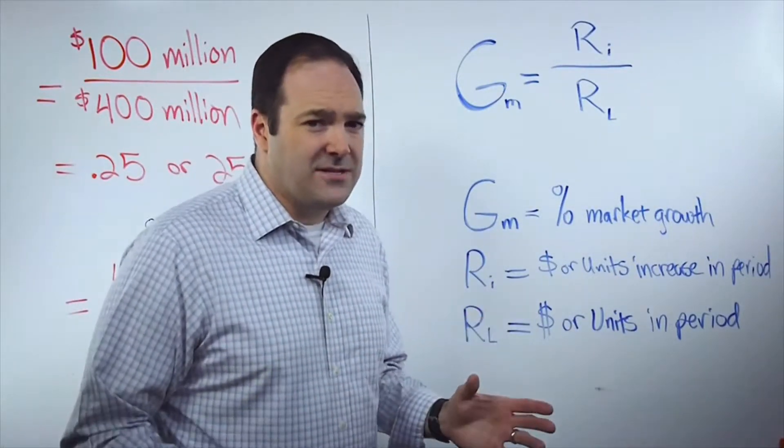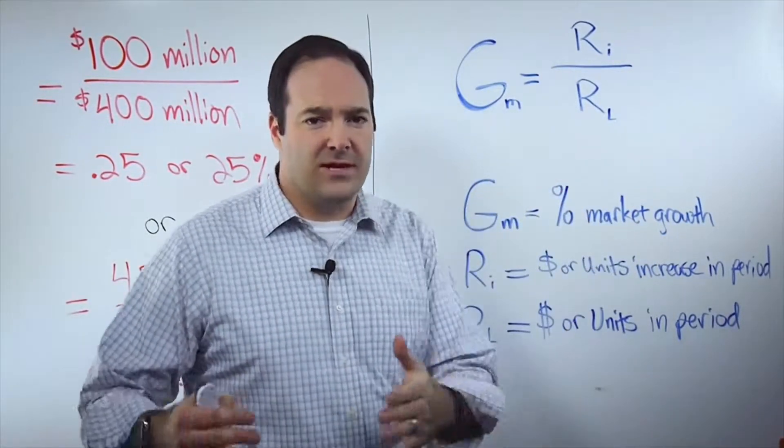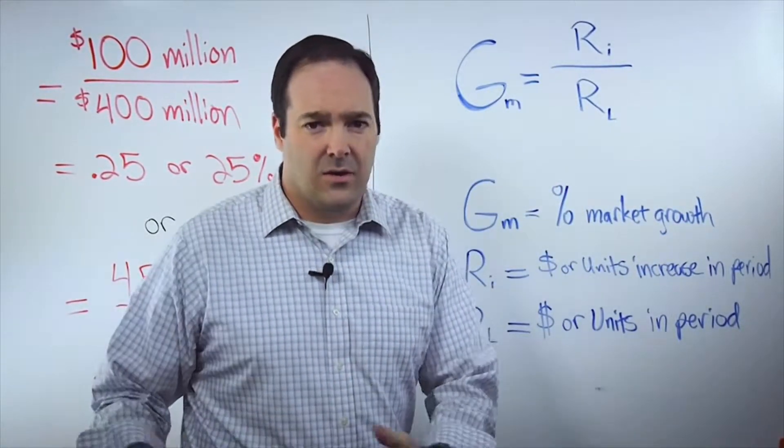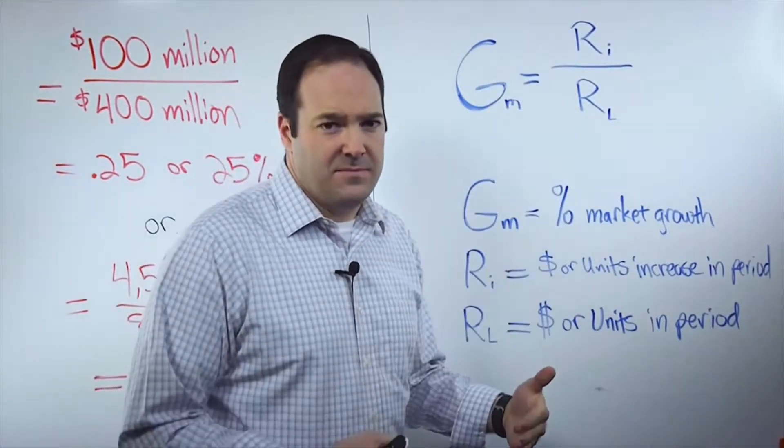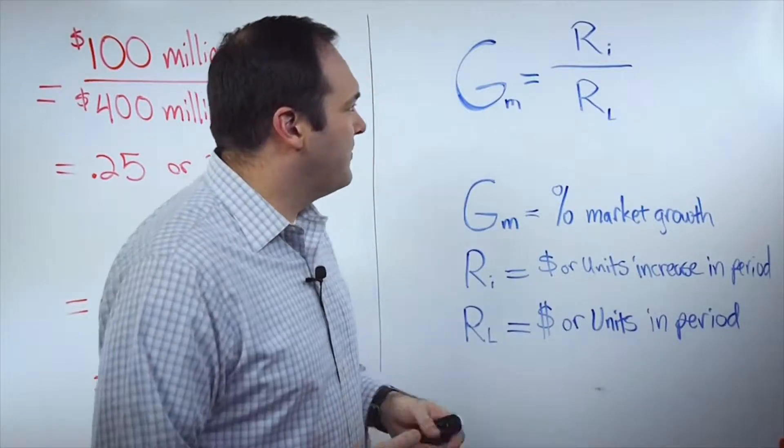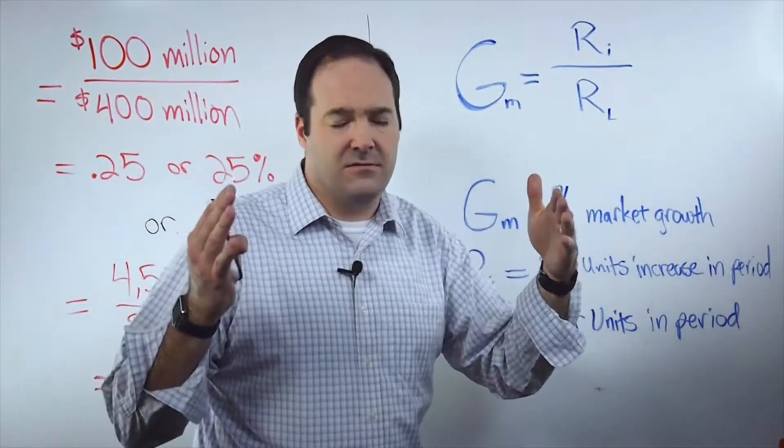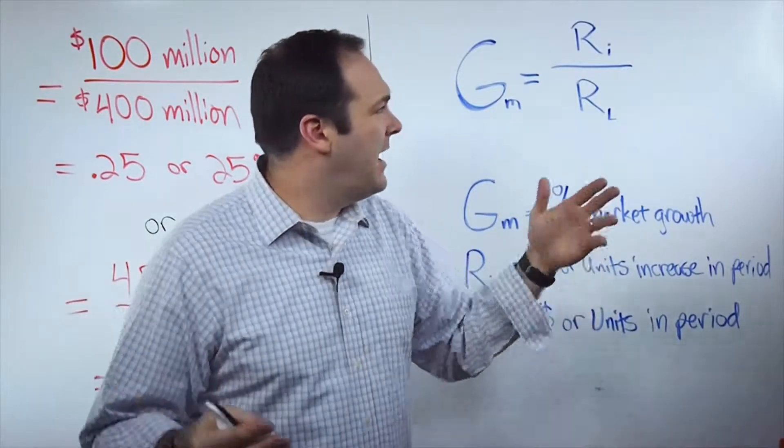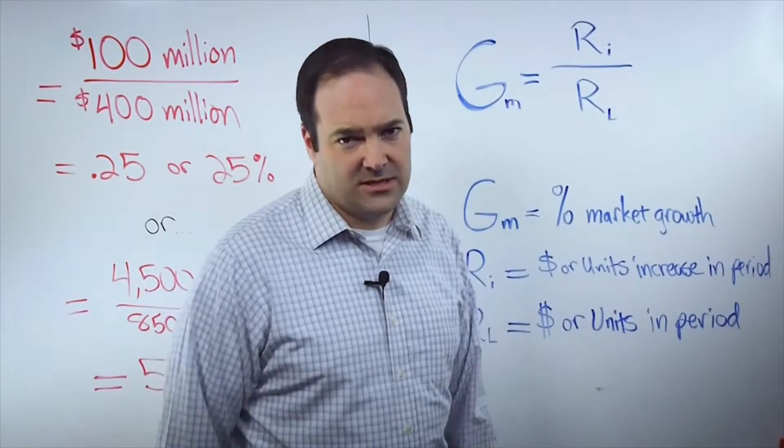Basically, you need to know or understand two numbers. One is your total revenue or unit sold for a given period last year or last period, and then the increase in the current period over last period. So, again, you need to know a total number for how many you sold either last quarter, last year, and then the increase above that number for this current period.